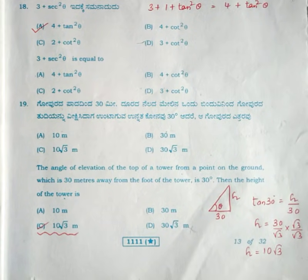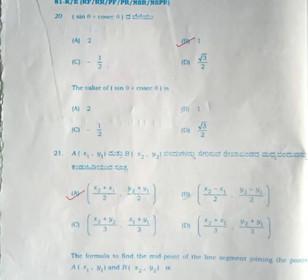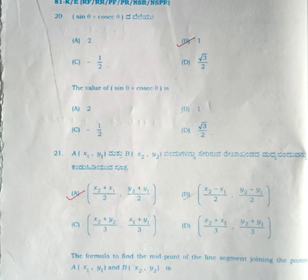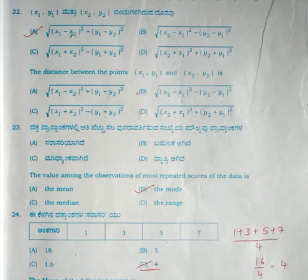Question number 19: the correct answer is option C, 10 root 3. You need to rationalize the denominator to get the answer 10 root 3 meters. Question number 20: the correct answer is option B, 1, because sin theta and cos theta are inverses and cancel each other out. For the 21st question, the midpoint is option A: x2 plus x1 by 2 and y2 plus y1 by 2. Question number 22: the correct answer is option A, the square root of (x2 minus x1) squared plus (y2 minus y1) squared.